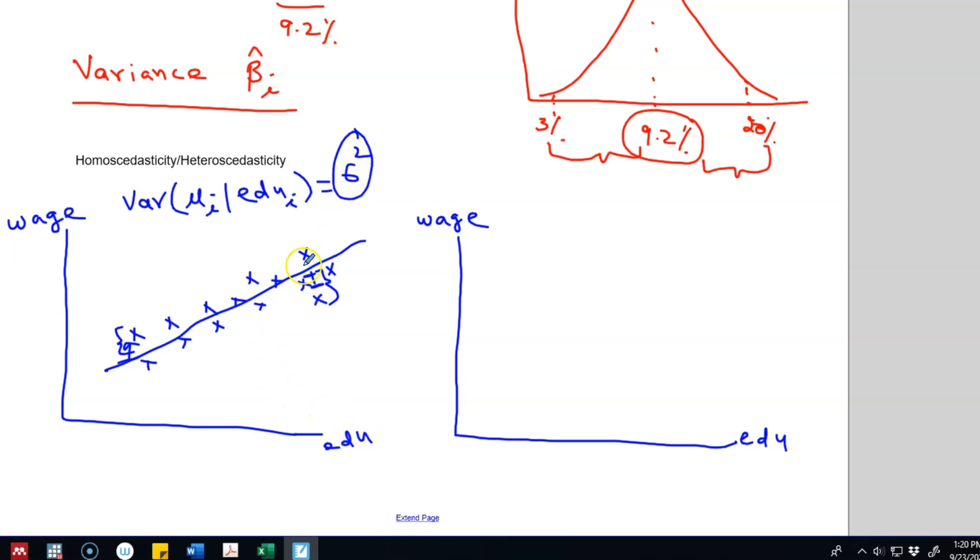That is, the variance is constant, so this assumption is called homoscedasticity. In contrast, heteroscedasticity means that the variance of these uis, that is the error term given the education level of individual i, it is not a constant number. Rather, it depends on the educational level.